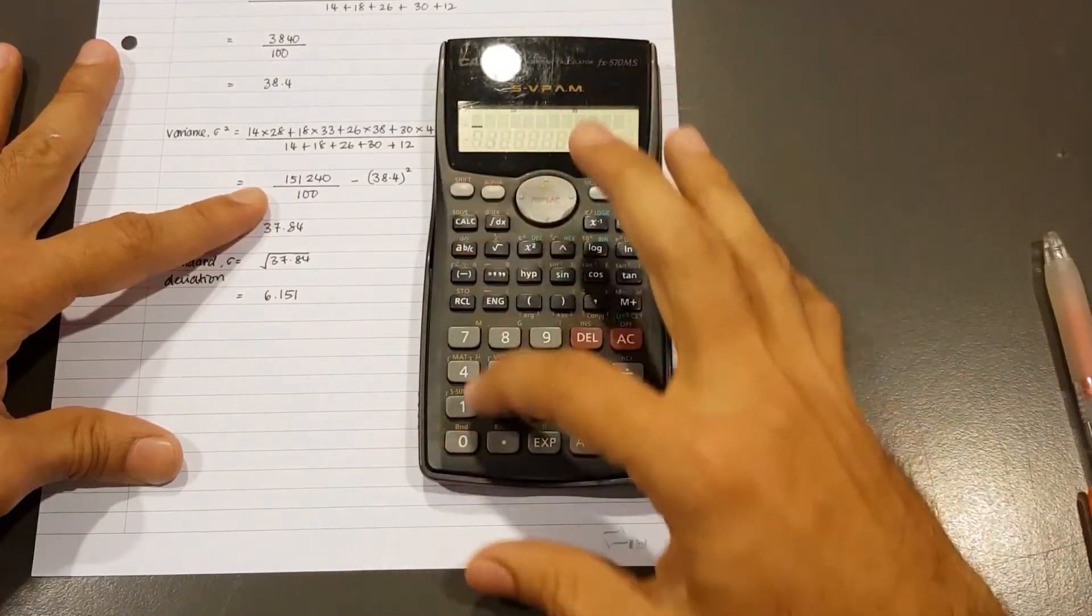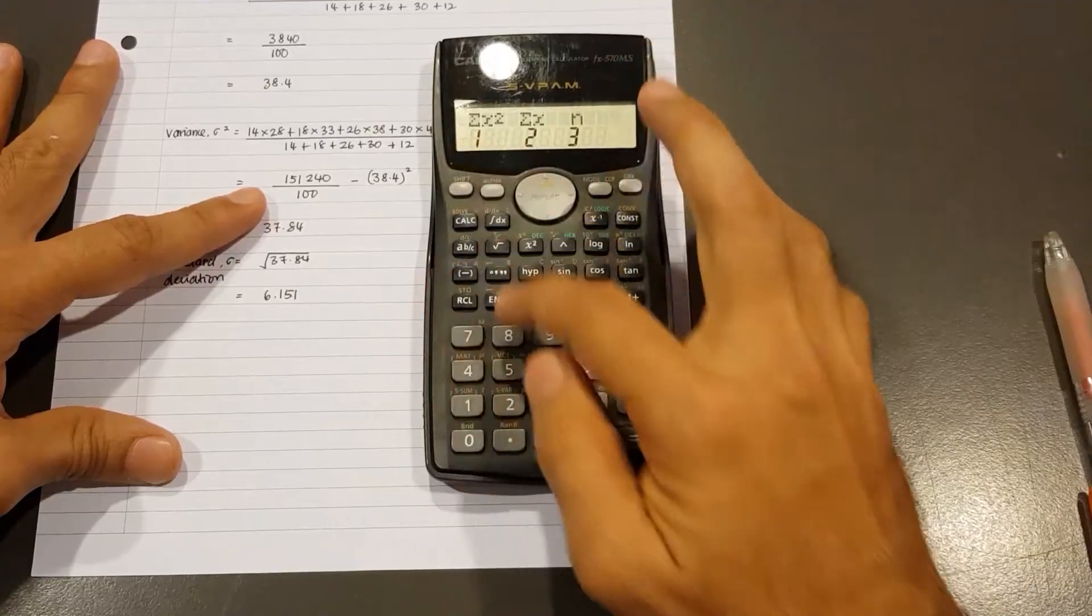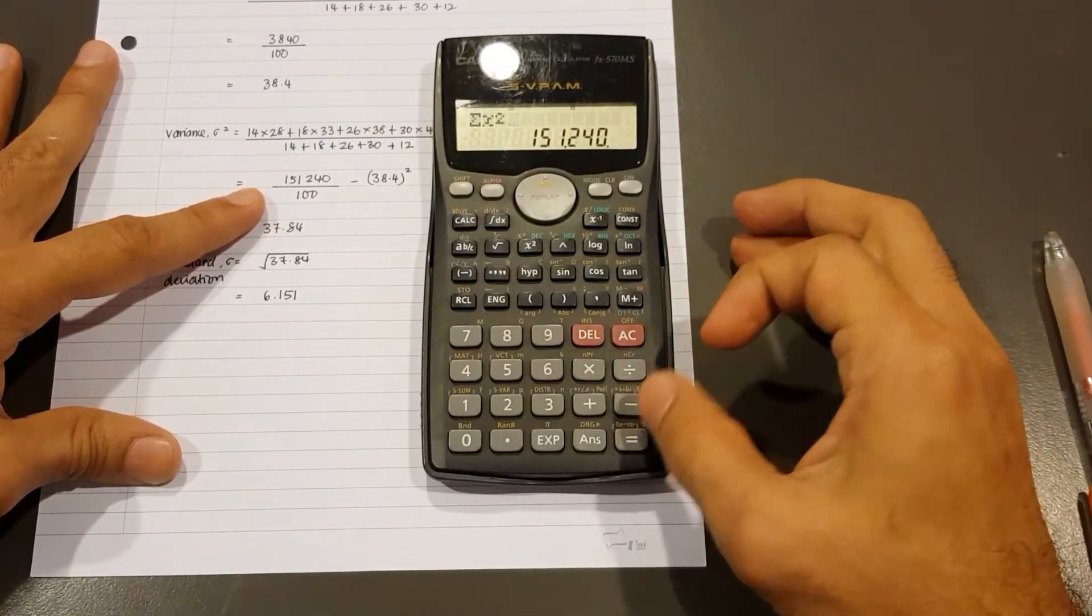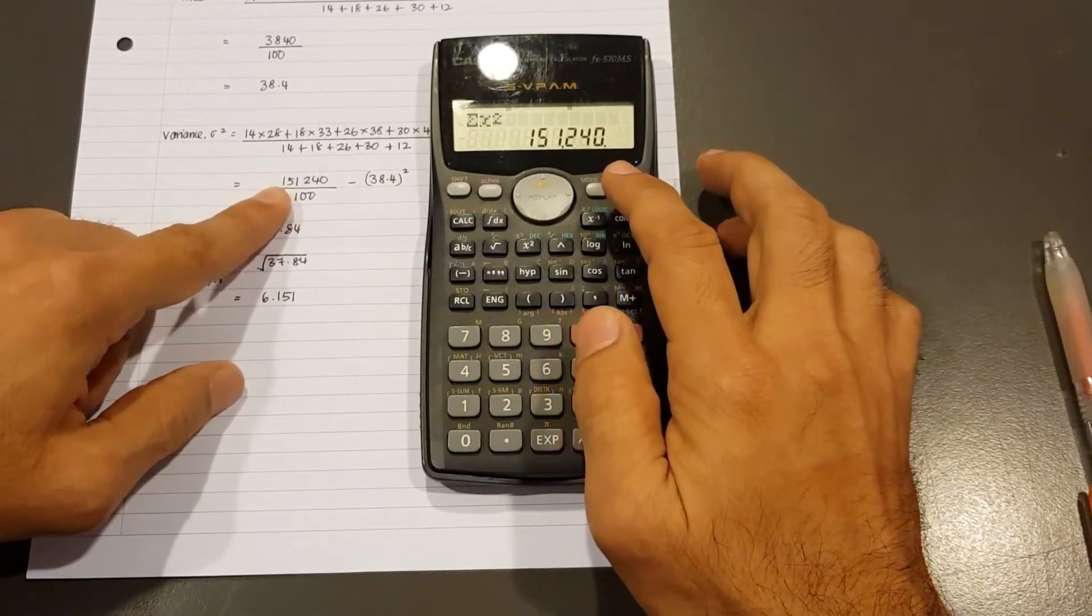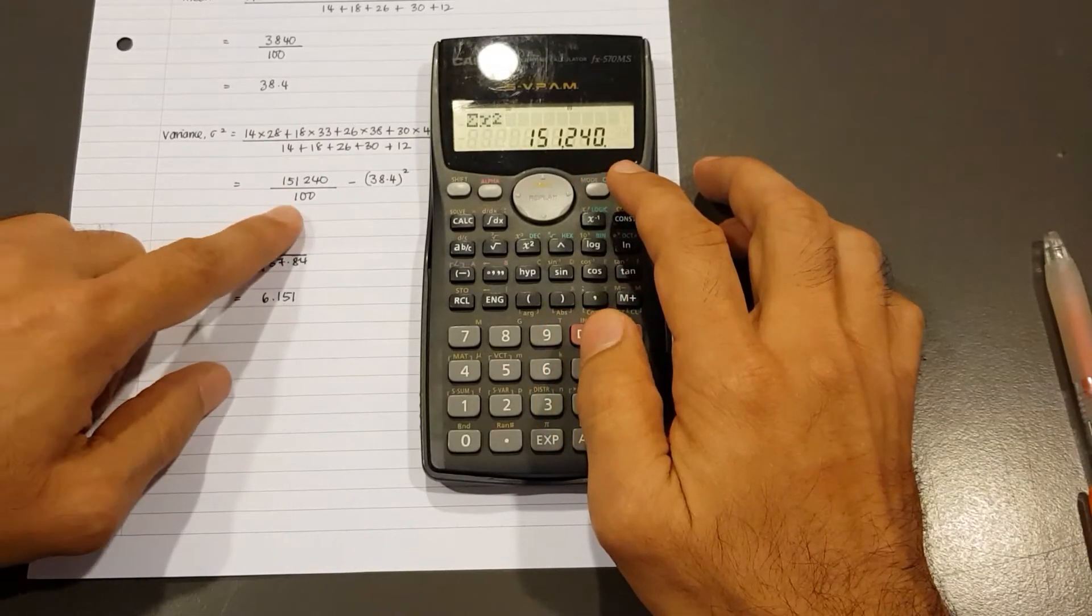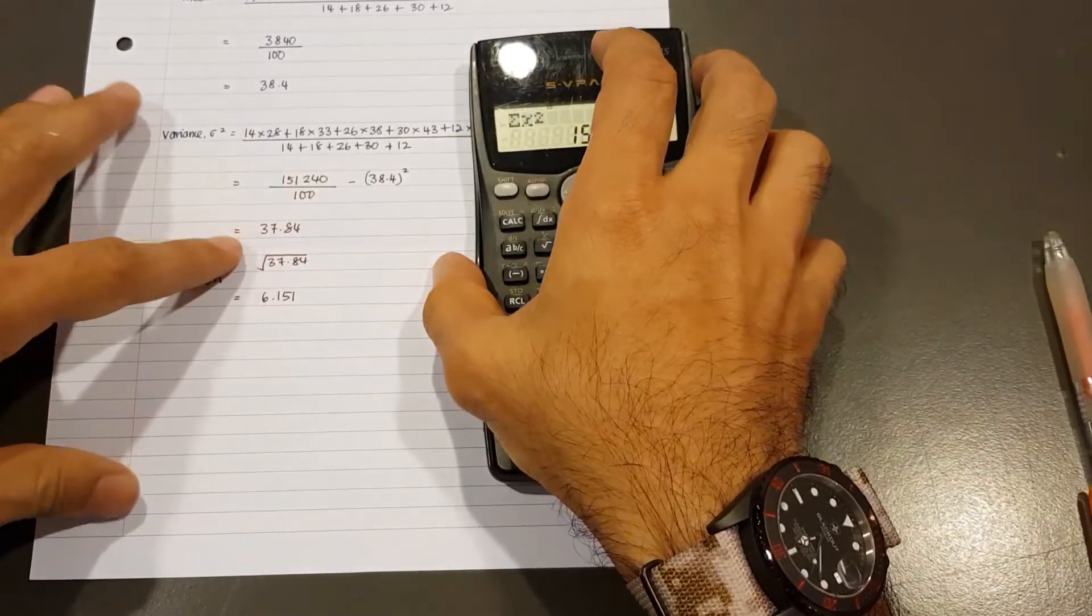This time I press Shift, 1 again. And we use number 1. That's Sigma X square. So I press number 1. I press equal to. And notice it's 1, 5, 1, 2, 4, 0. That matches with that number there. Of course, this is 100 because it is the total frequency from the denominator.